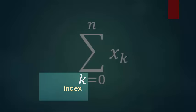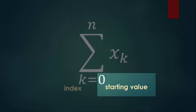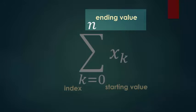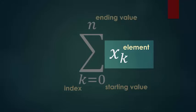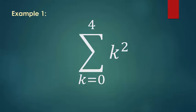Again, k is our index. It does not have to be k. You'll see i, sometimes you'll even use n. In this case, we're using k. We've got our starting value, and then at the top we have our ending value, and again our element. Let's look at an example.